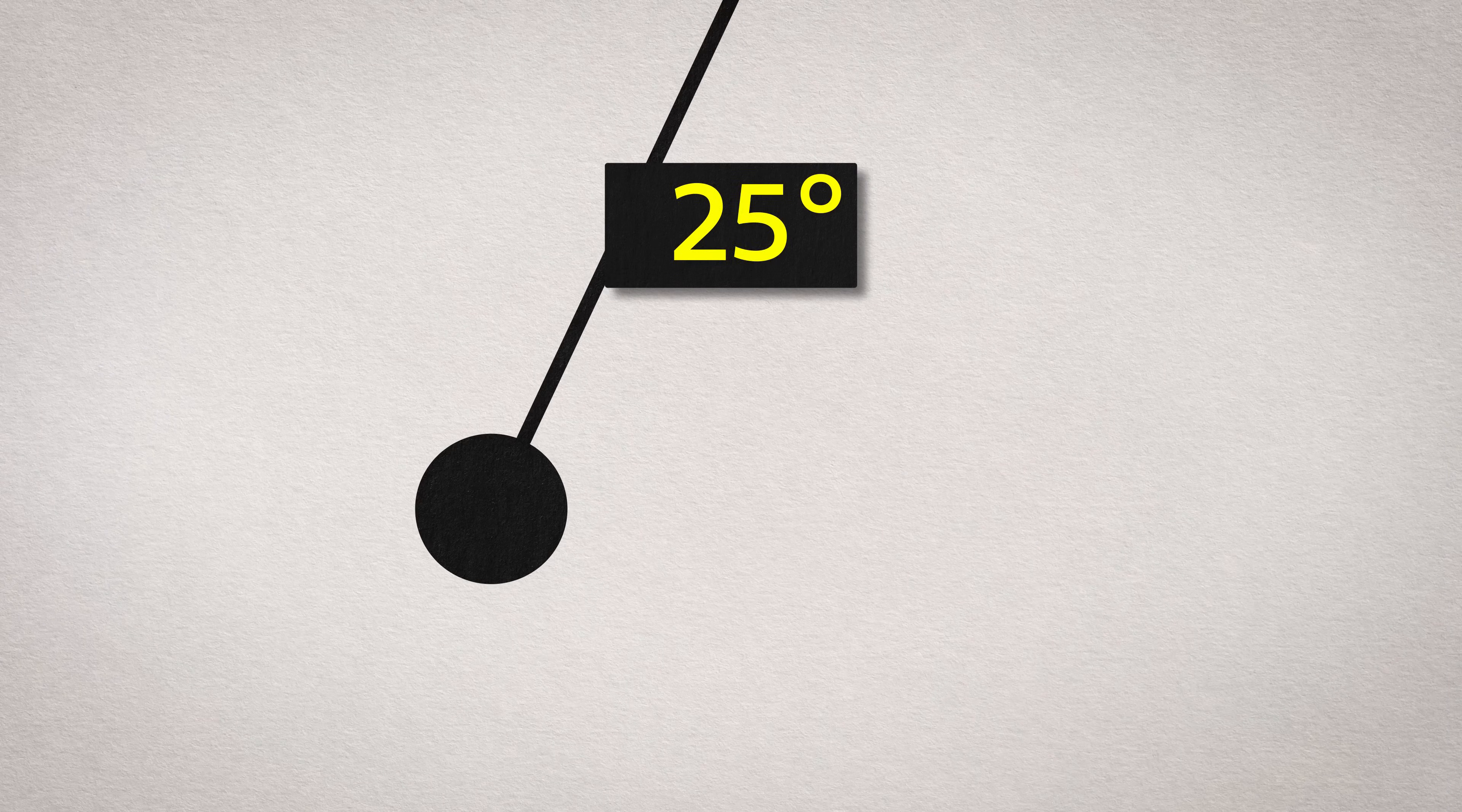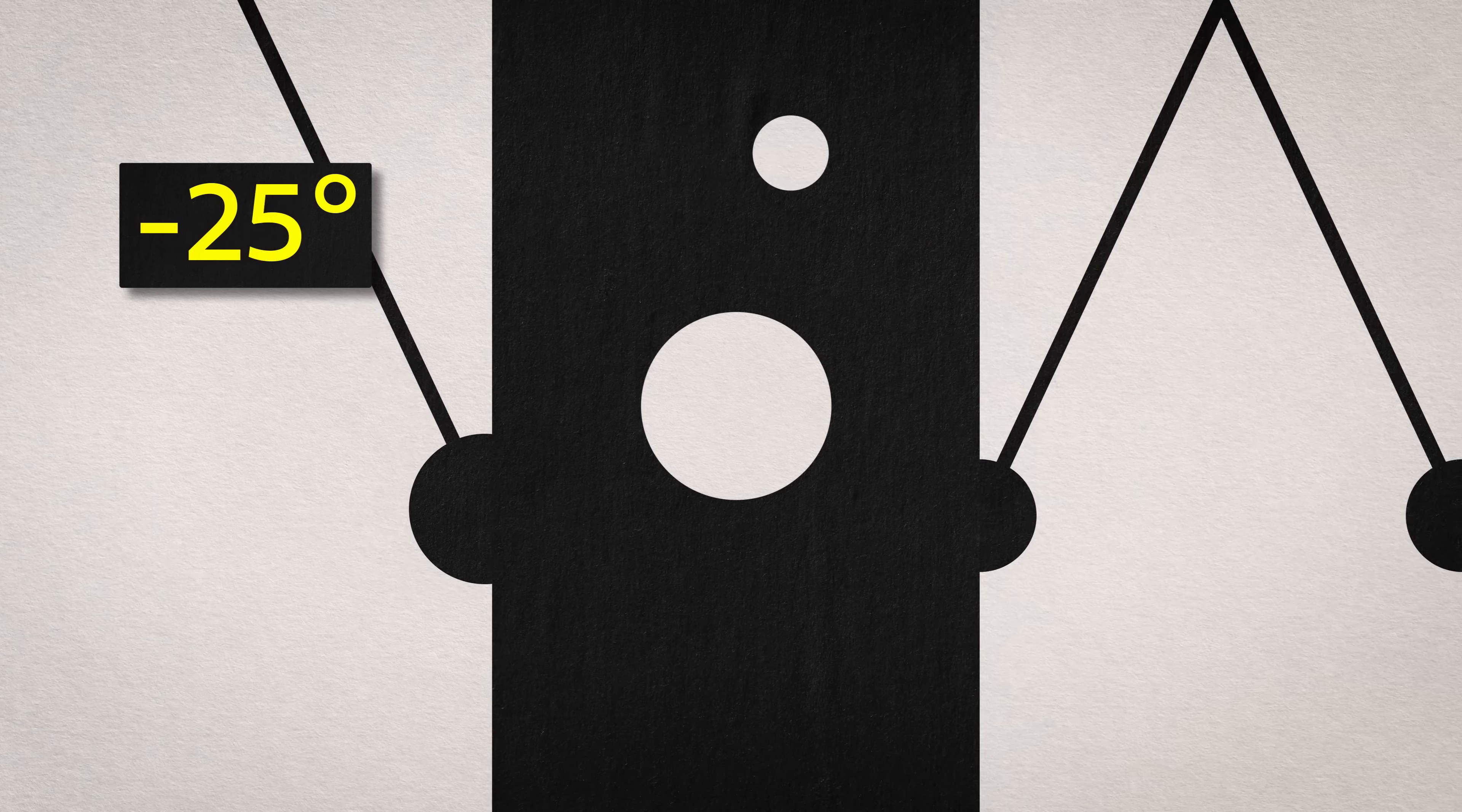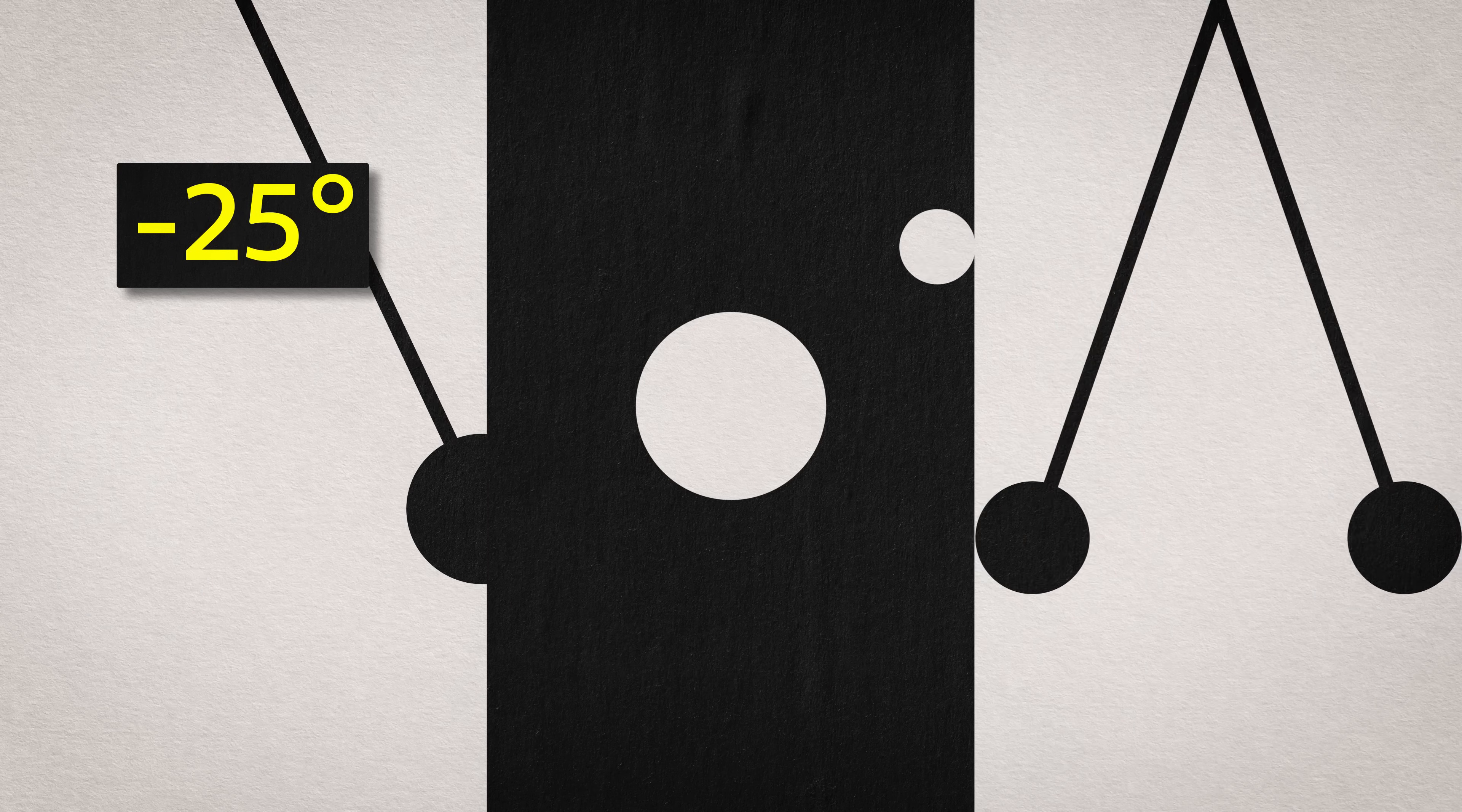chances are you're familiar with these kinds of systems. You describe the position of each element in the system with a number, or several numbers, and the change in those numbers is their velocity. This works very well for these kinds of systems, but there's a whole world of things you can't describe this way.